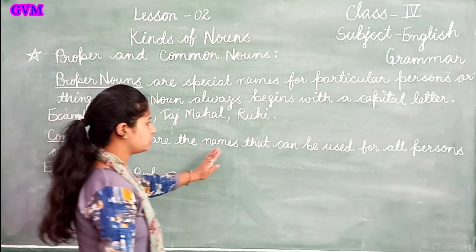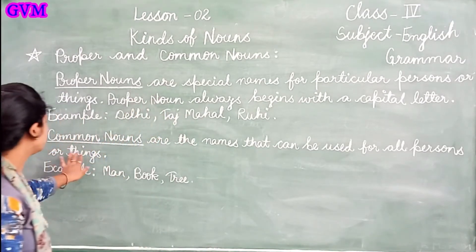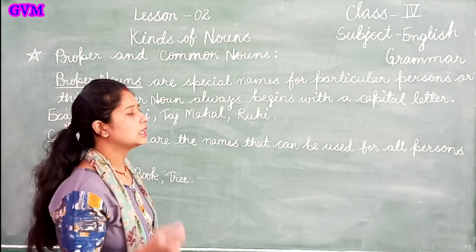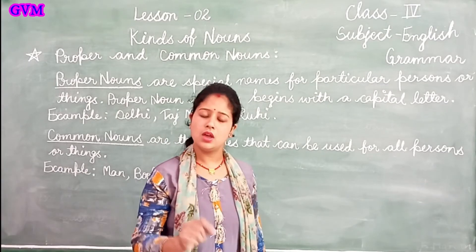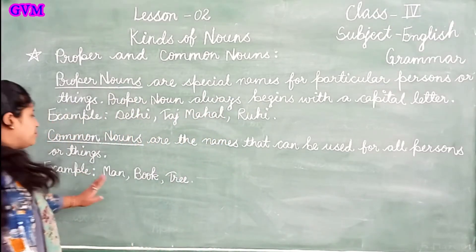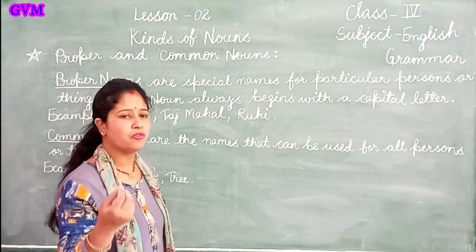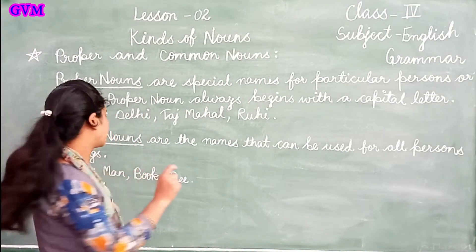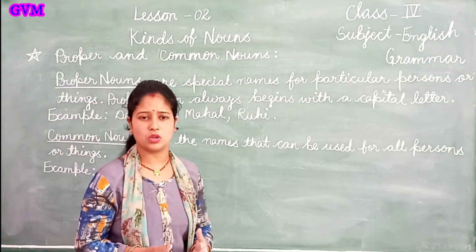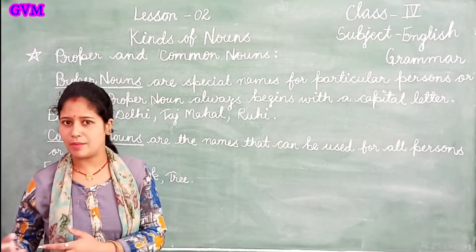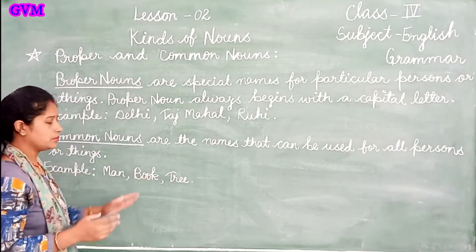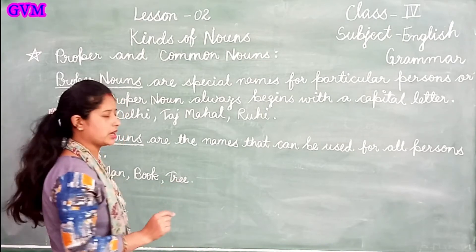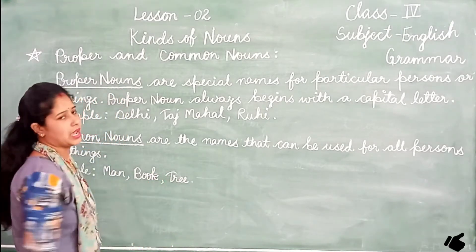Common nouns are the names that can be used for all persons or things. For example, 'man' means all men — uncle, father, or brother are all men, so 'man' is a common word for all of them. 'Book' is a common name — there are story books and drawing books; 'tree' is also a common name for all types of trees.